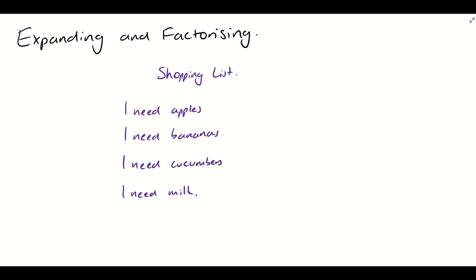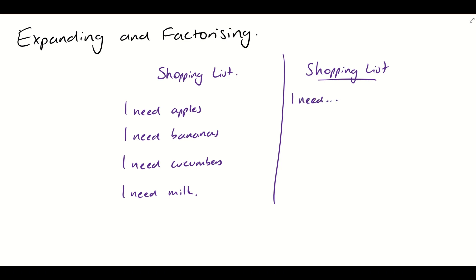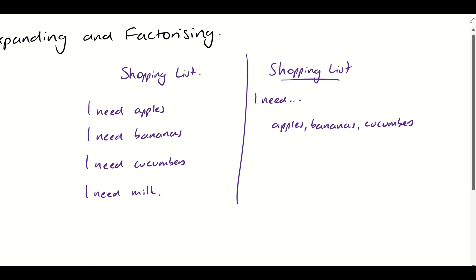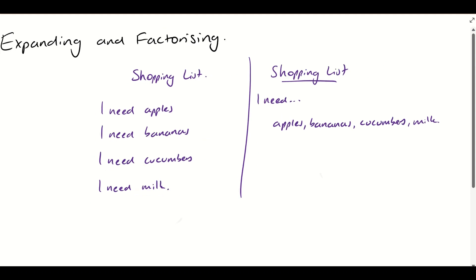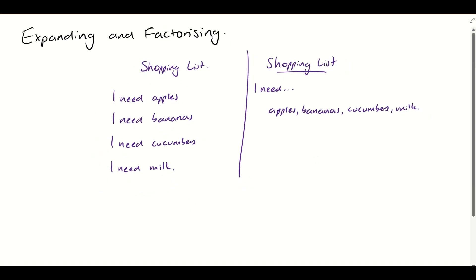The answer is no. What we could do instead is have our shopping list over here like this. Instead of writing 'I need apples, I need bananas' — writing 'I need' every time — we just write up the top: 'I need...' and then make a list: apples, bananas, cucumbers, and finally milk. This is a real-life example of factorizing.